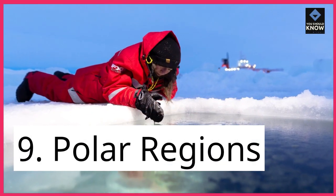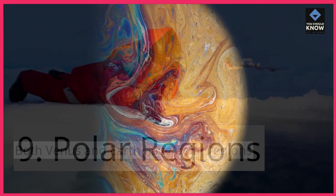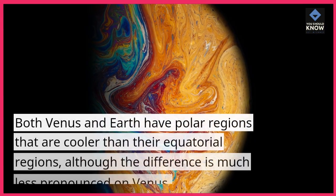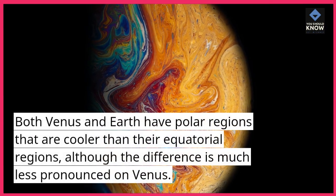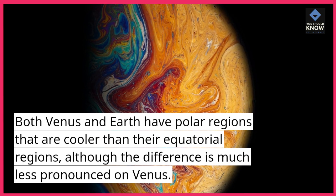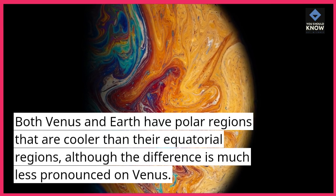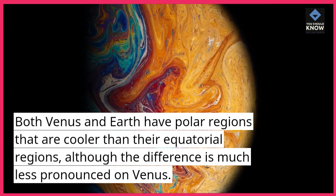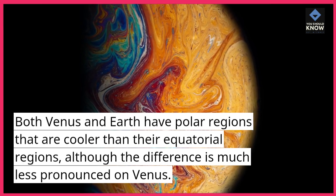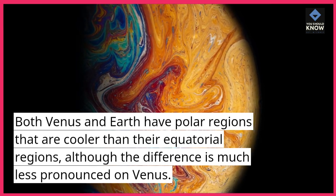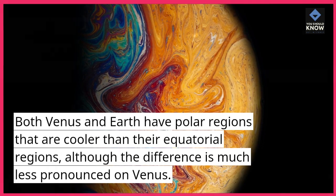9. Polar Regions: Both Venus and Earth have polar regions that are cooler than their equatorial regions, although the difference is much less pronounced on Venus.